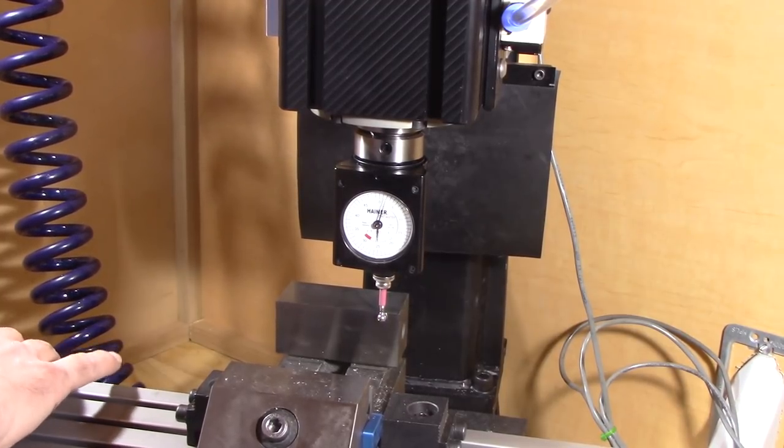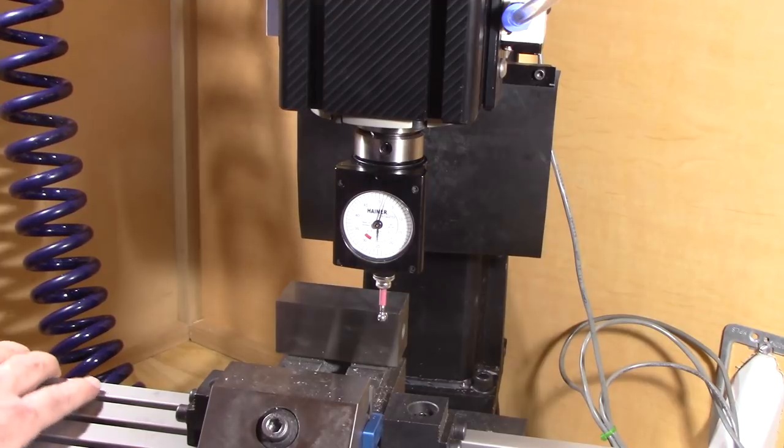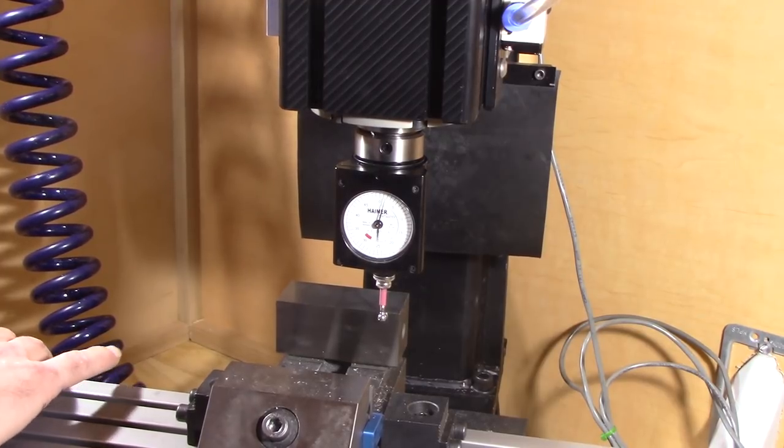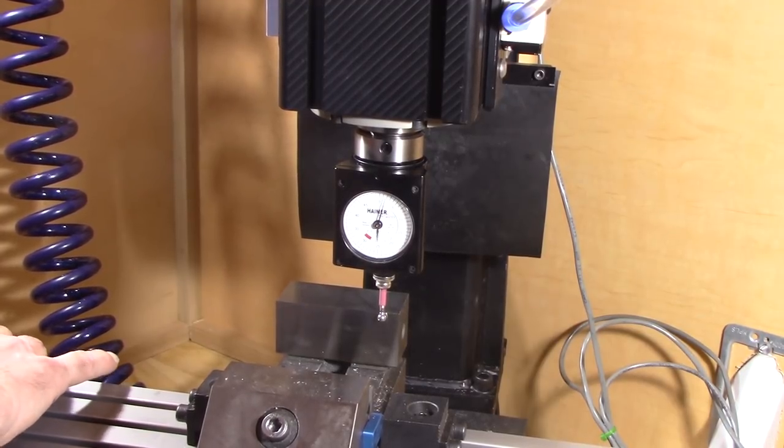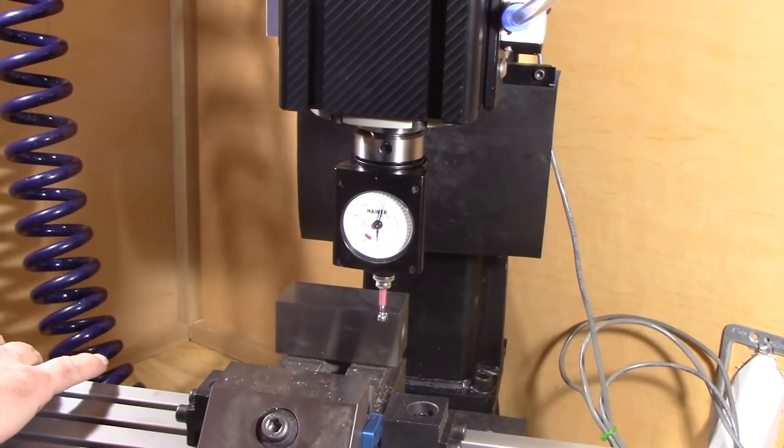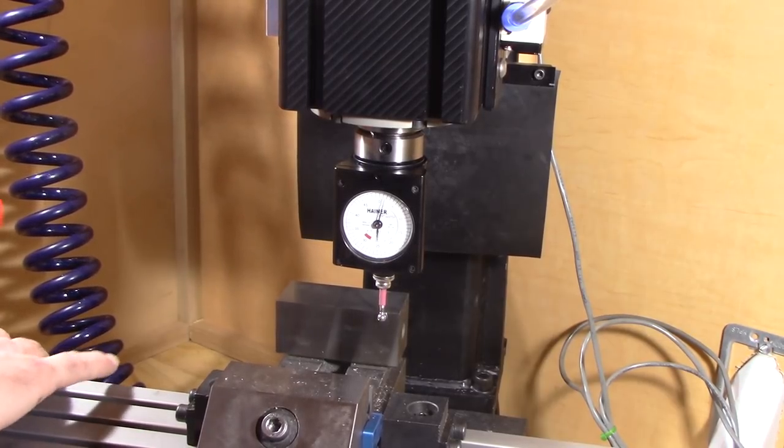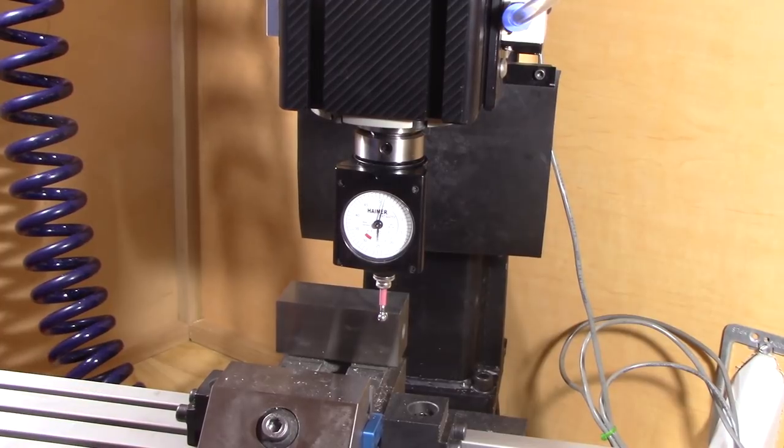What I'm noticing here is I need to adjust the gibs on the ways, because I can rock this back and forth a few tenths. And I'd like it to be a little bit more precise than that. So I'm going to go ahead and adjust all of this, get it set in, and then we're going to do our first cut.